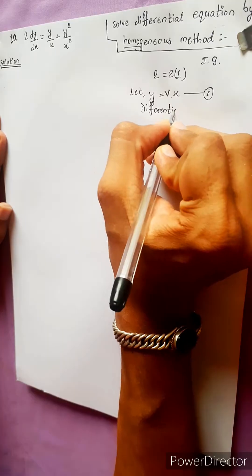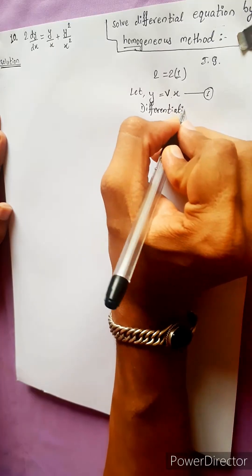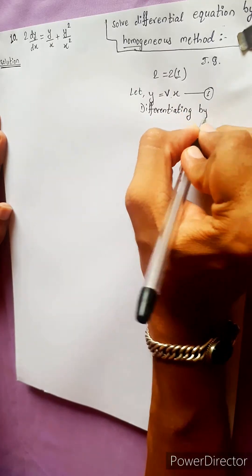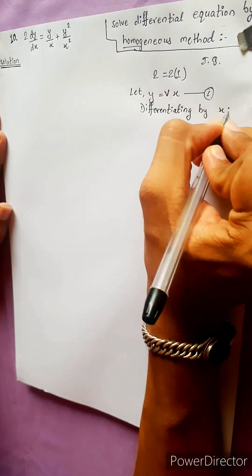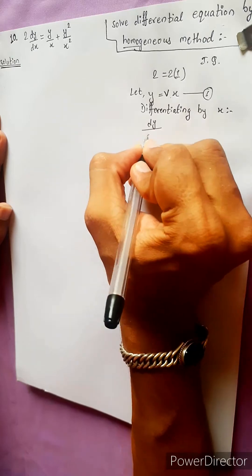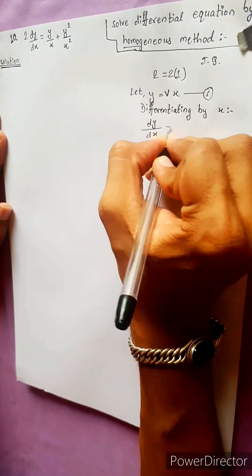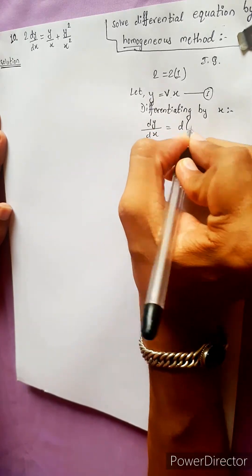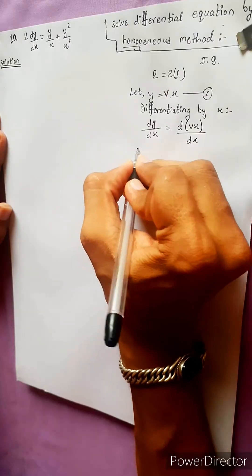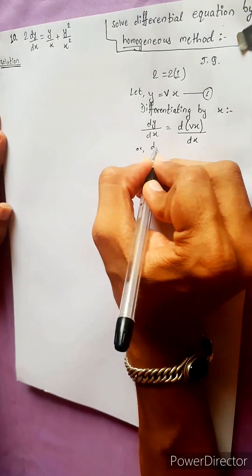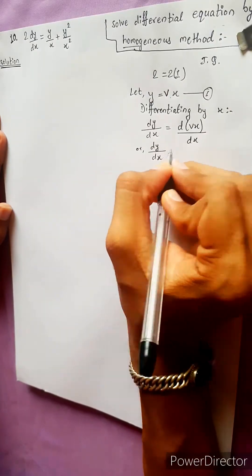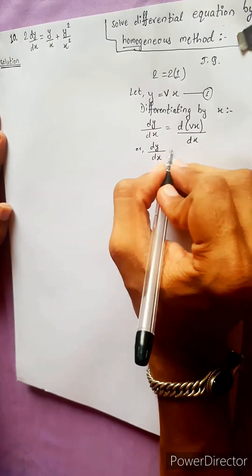Differentiate by x. dy/dx equals to — differentiating y = px with respect to x gives dy/dx equals to p plus x dp/dx.